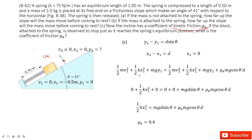So: initial kinetic energy plus initial elastic potential energy plus initial gravitational potential energy equals final kinetic energy plus final gravitational potential energy plus thermal energy. Friction force does work on the system, which is why we include the thermal energy term.